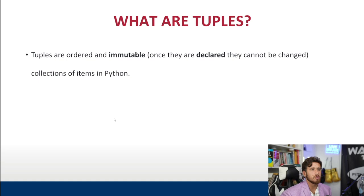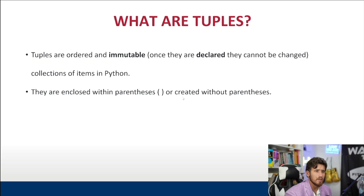So what are tuples? Tuples are ordered and immutable — once they're declared, they cannot be changed. They're a collection of items or elements in Python, very similar to lists in structure, but you're unable to modify them. They remain the same constant length once you declare them. Tuples are enclosed with parentheses, or can even be created without parentheses, though I highly suggest using parentheses to make it clear you're creating a tuple.